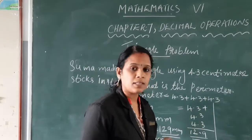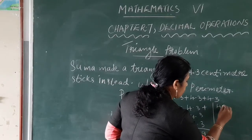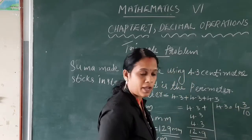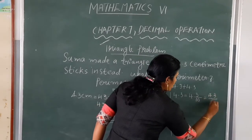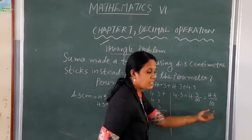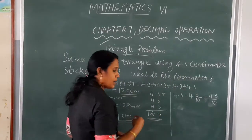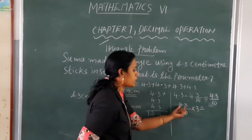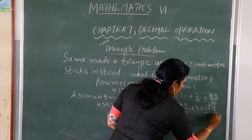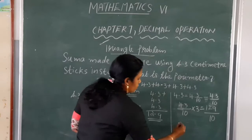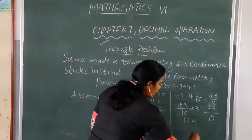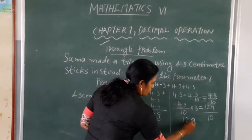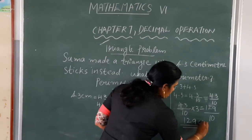There is another way of doing this. Here, 4.3 is equal to 43 by 10. So 3 times 43 divided by 10 is equal to 43 into 3 divided by 10, which equals 129 divided by 10. So here, one number before the end we have to put a decimal: 12.9 centimetres.